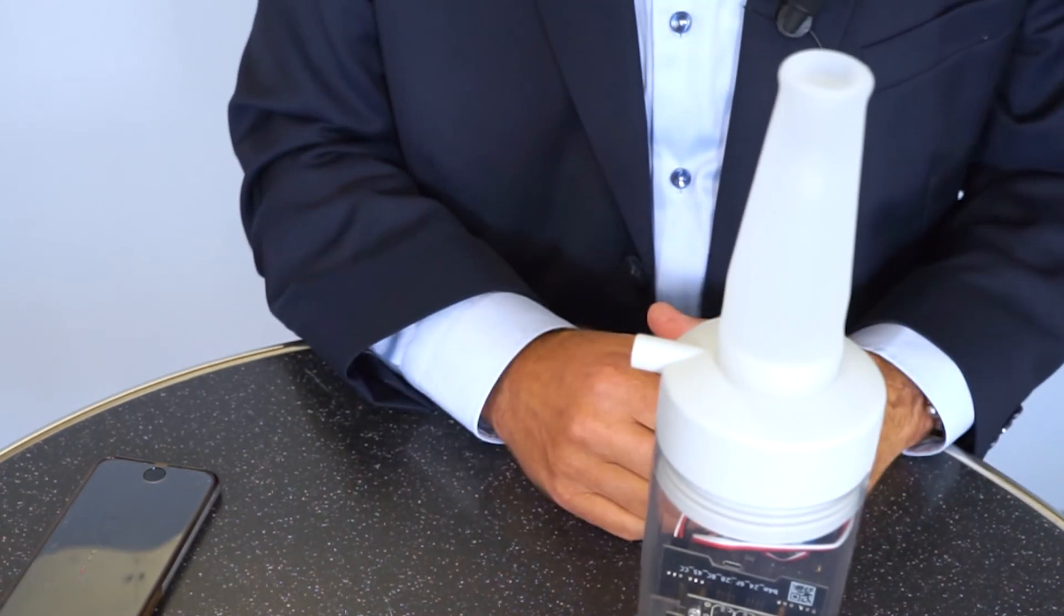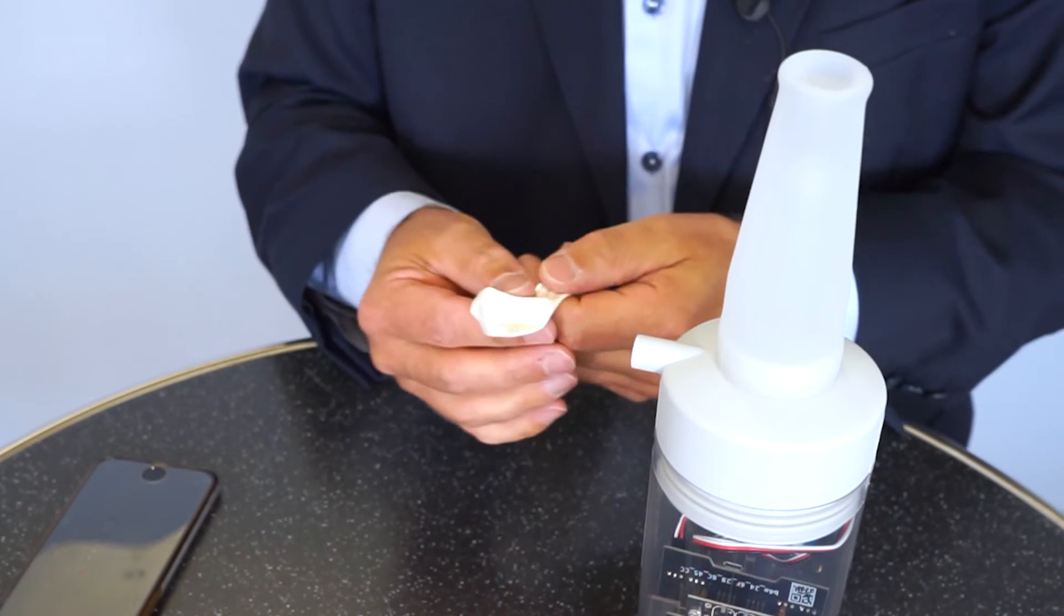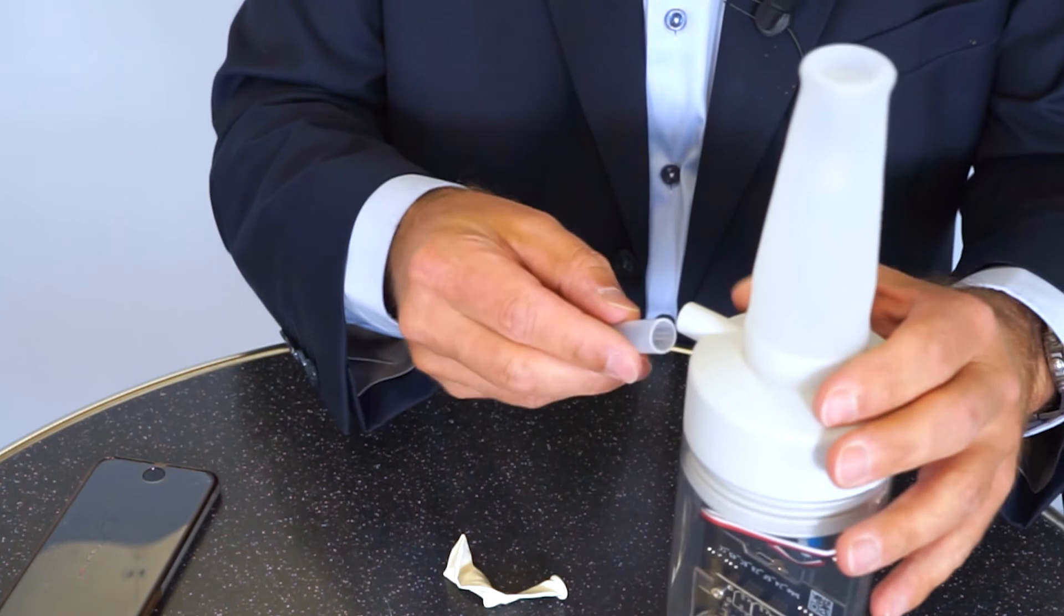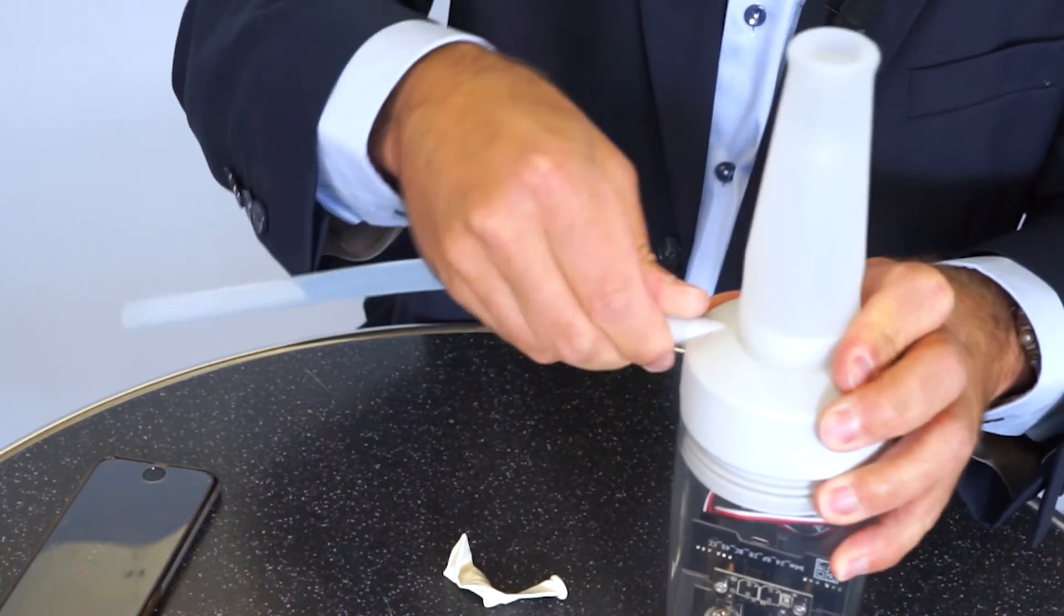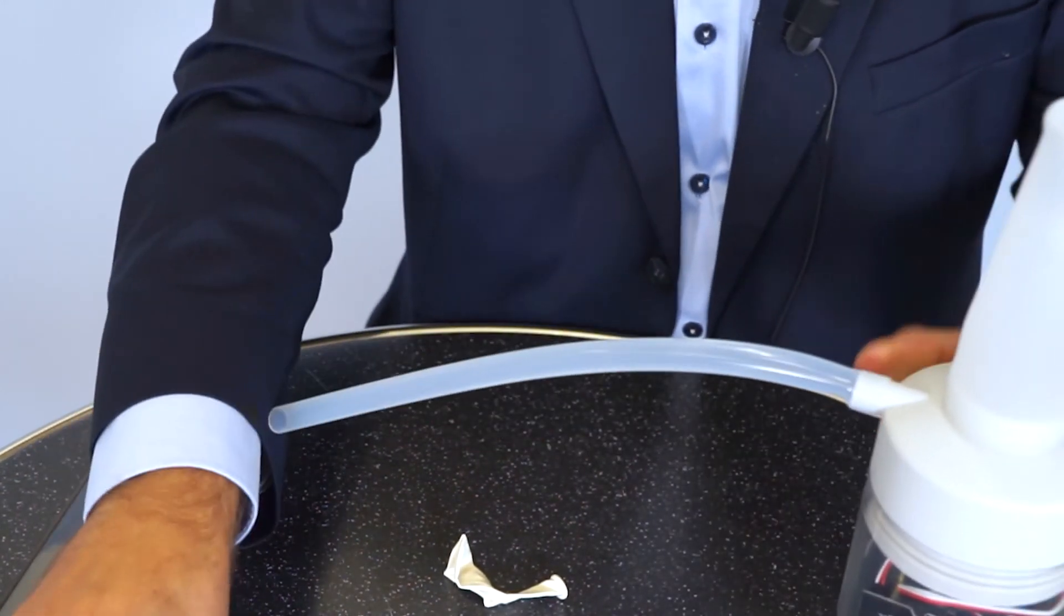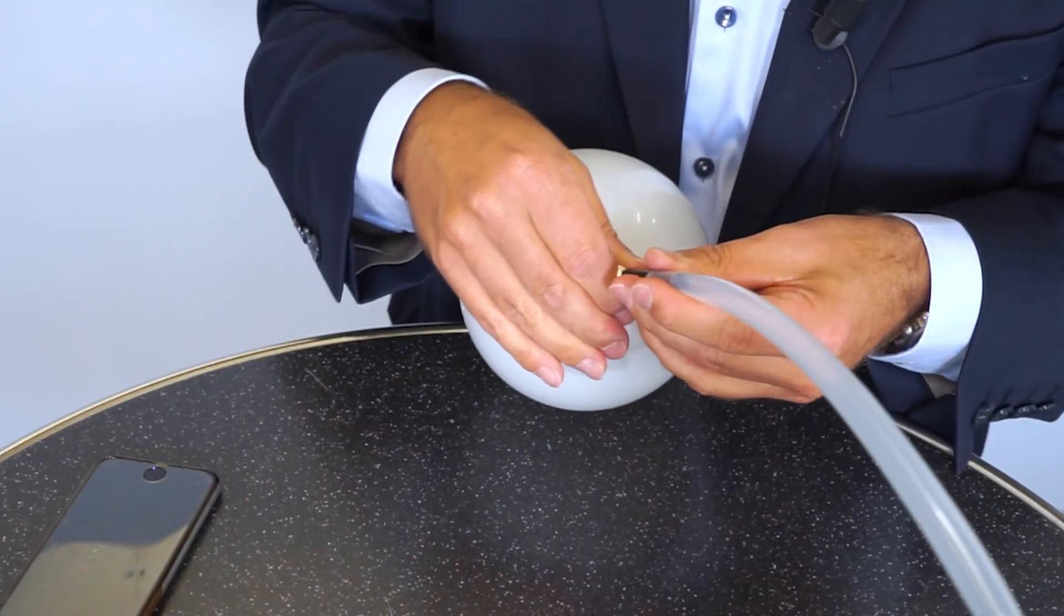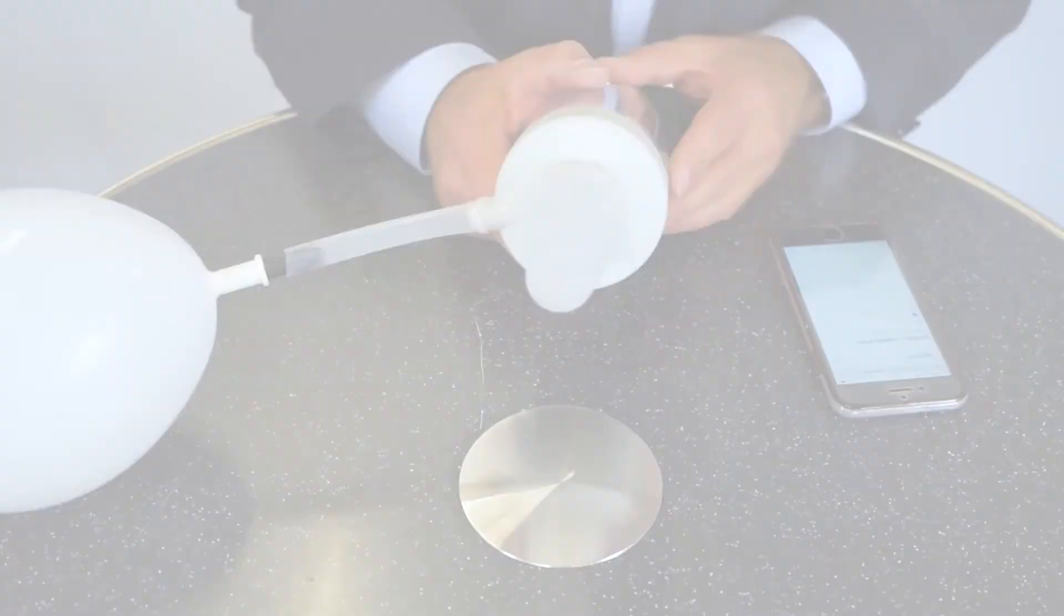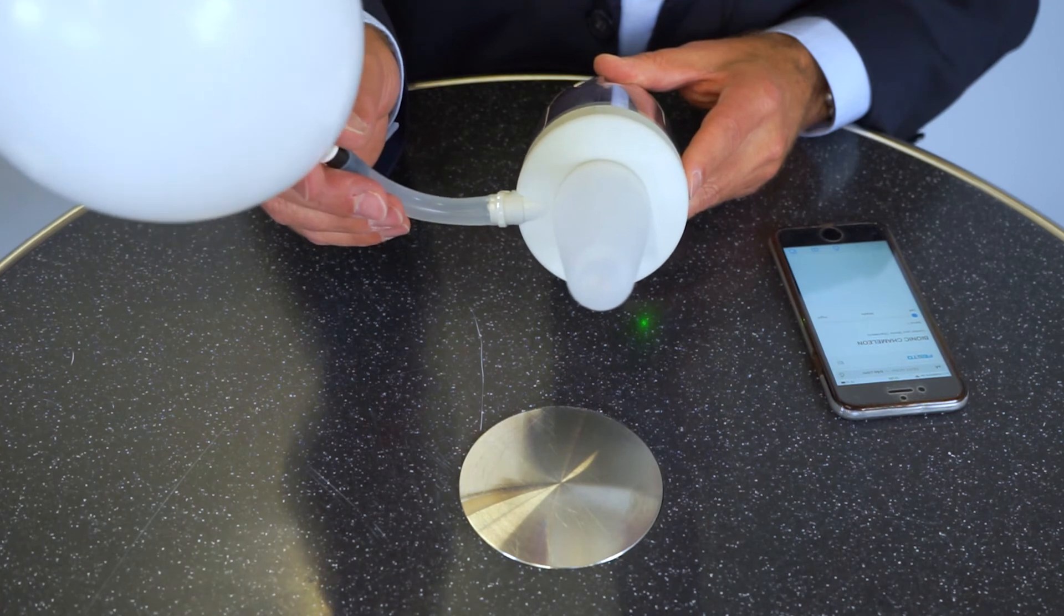But the air pressure inside is missing. And for this we need a very simple tool, the balloon. And to connect the balloon with the body we use this silicone tube. We can fix here. Then we have the little black tube, put in here, and connect the balloon with the black tube. So here we have the ready assembled chameleon gripper with the balloon as a simple pressure storage.